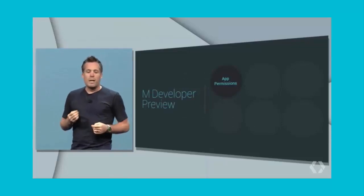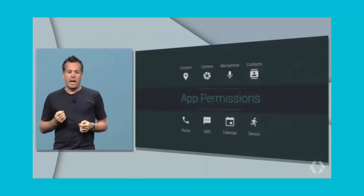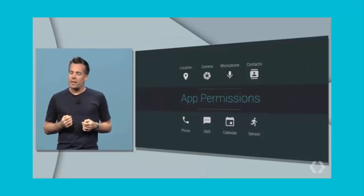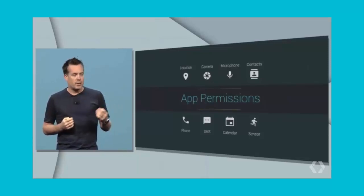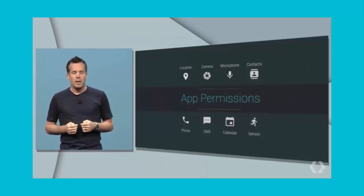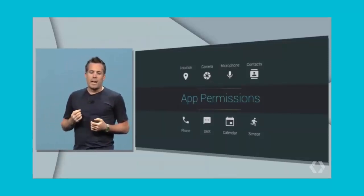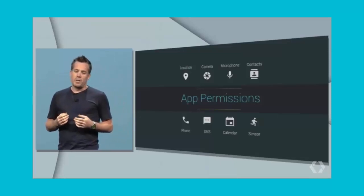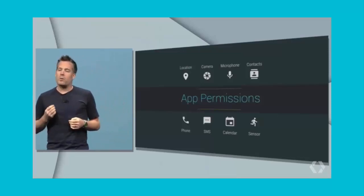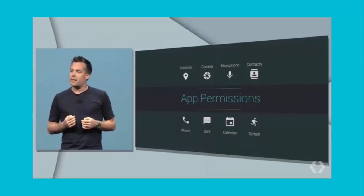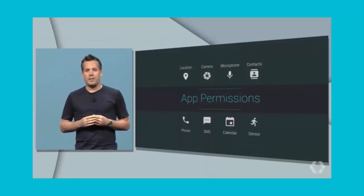First, we're greatly simplifying app permissions to a smaller set of easily understood things, like location, camera, microphone. Second, apps will now ask you for permission the first time you try to use a feature instead of asking during app installation time.